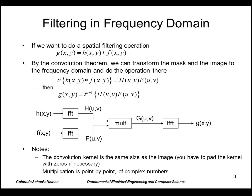A note on this: the convolution kernel H has to be the same size as the image. The reason is that we want to do a point-by-point multiplication of the two transforms, so those have to be the same size. If necessary, we will pad the filter to be the same size as the image.